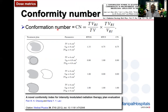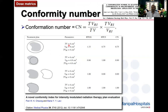Some deficiencies of those indices are overcome by another index called the conformity number, known mostly as the PADDICK index. That paper appeared in 2000, but actually even before that — in 1997 — this index was first defined in a paper in the Red Journal by the author Van't Riet. Different definitions exist for these indices and can vary according to whether you are using RTOG or other accepted definitions.